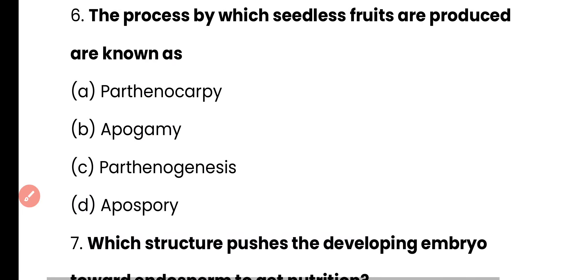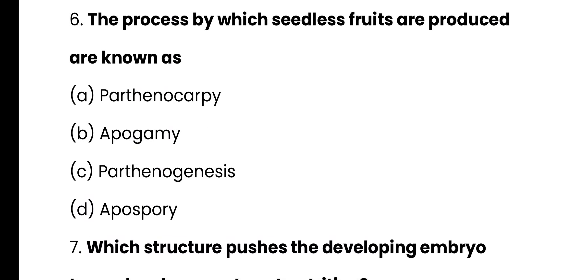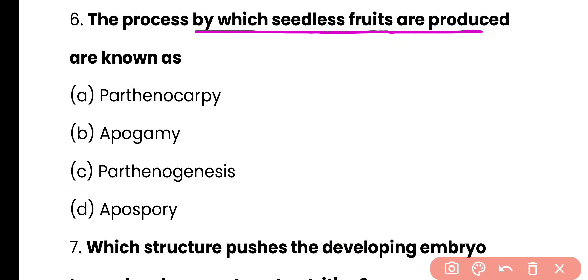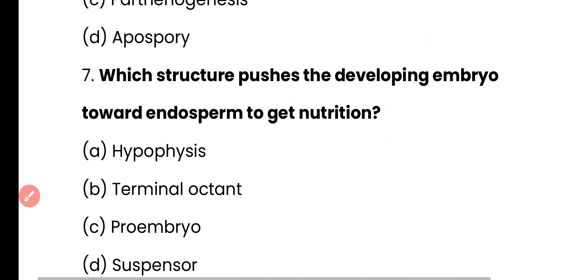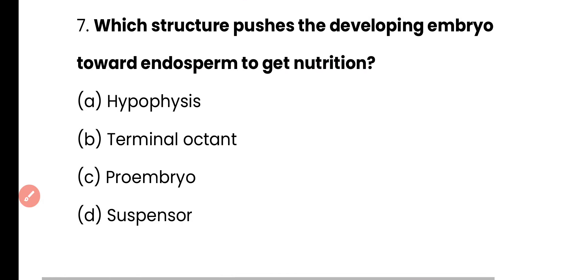Question number 6. The process by which seedless fruits are produced is known as: parthenocarpy, apogamy, parthenogenesis, or apospory? The correct answer is option A. Parthenocarpy is the process through which seedless fruits are produced.